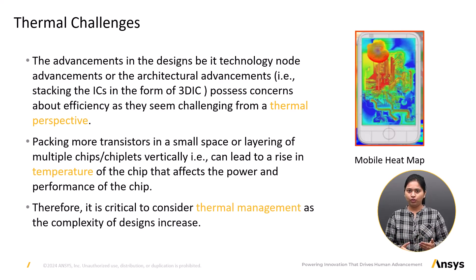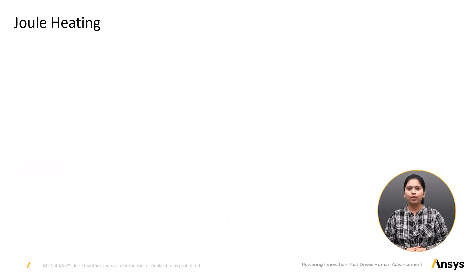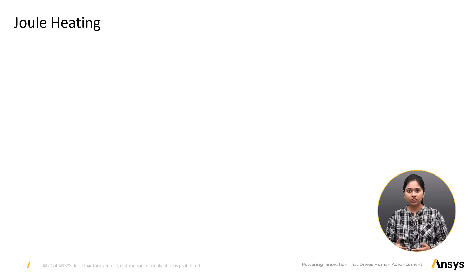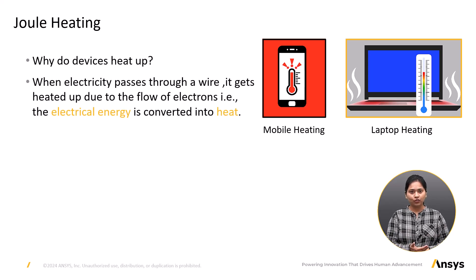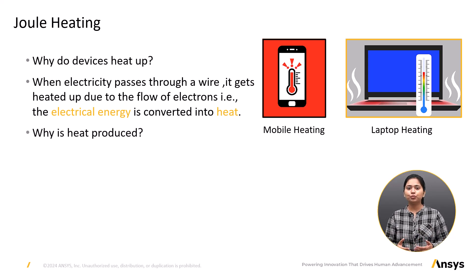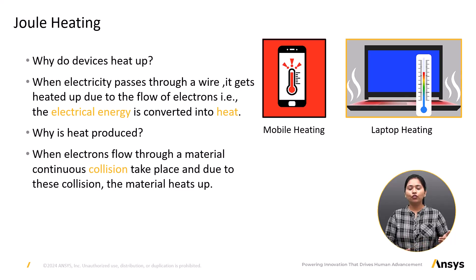Therefore, it is important to consider thermal management as the complexity of the design increases. Before discussing thermal effects on power integrity, let's revisit the basics of Joule heating. When we continuously use phones, laptops or other devices, they start heating up because the devices are made of electrical circuits. When electricity passes through an electrical circuit, it gets heated up due to the flow of electrons — that is, electrical energy is converted into heat due to continuous collision of electrons flowing through the material. This process is known as Joule heating.